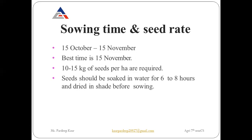The sowing time is between 15 October and 15 November — the best time is around 15 November when temperature decreases and the weather is cool. The seed rate required is 10 to 15 kg per hectare. Before sowing, seeds should be soaked in water for 6 to 8 hours and then dried in shade before sowing.